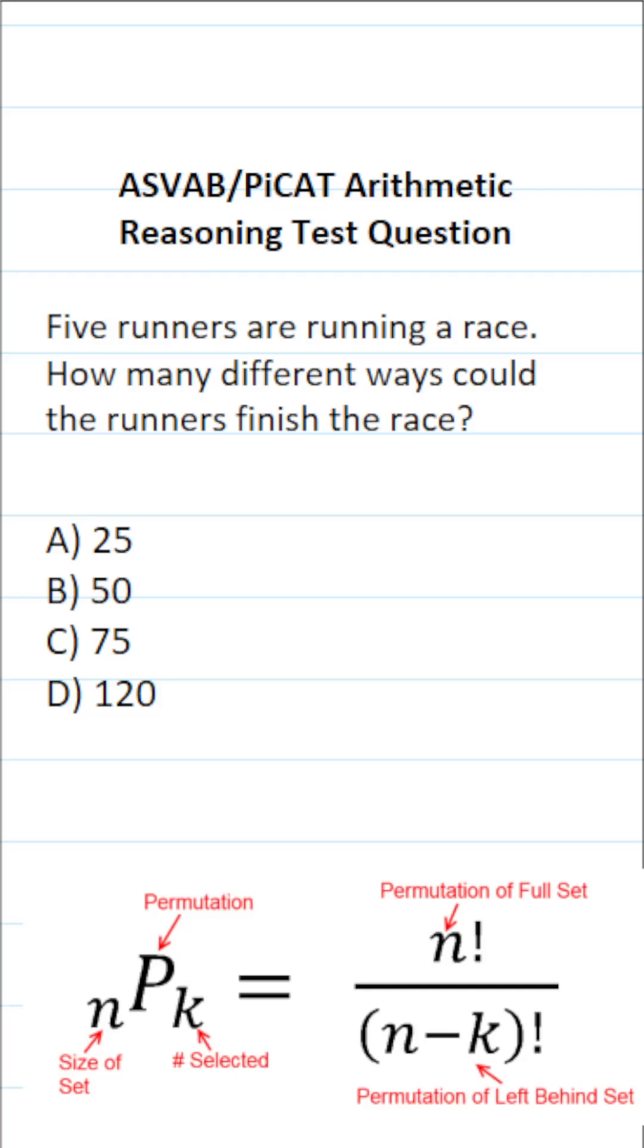So in order to solve this one, we're going to use the permutation formula, which says nPk is equal to n factorial over n minus k factorial.